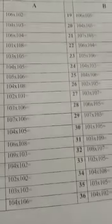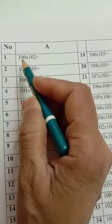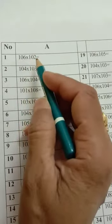Today we will do page number 8. This one is question number 1: 106 multiply by 102. How you do it?